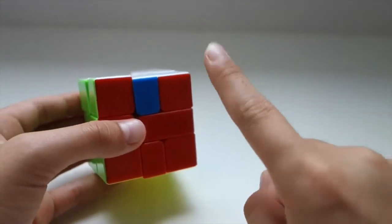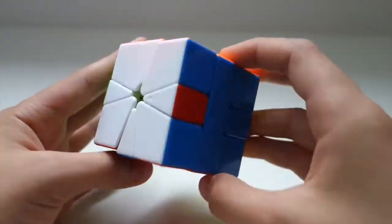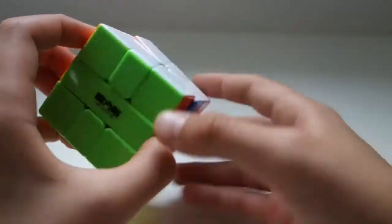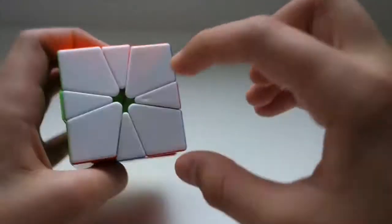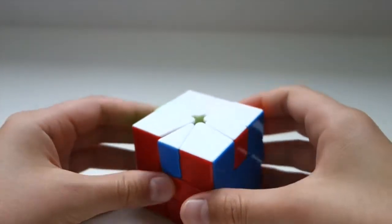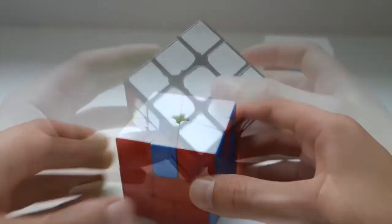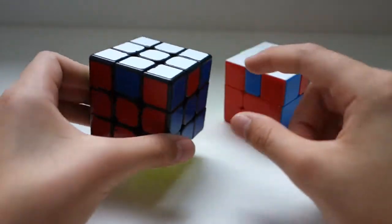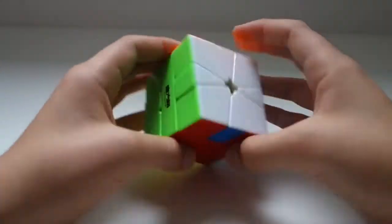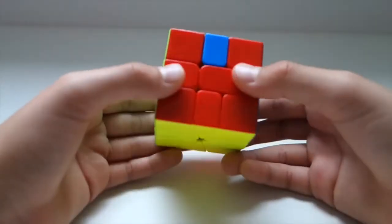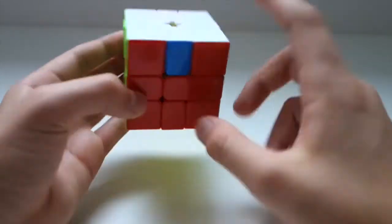So the first case looks like this. These two edges, or any two edges in one layer, will need to be swapped. For example, you can see that everything else is solved except for these two edges that need to be swapped. On a 3x3, this case would actually be impossible. But due to the nature of the square one and how it's so different from the 3x3, you can actually get this case and there is an algorithm to solve it.